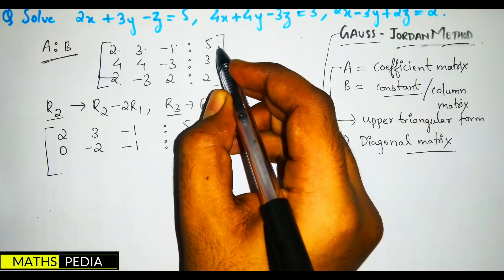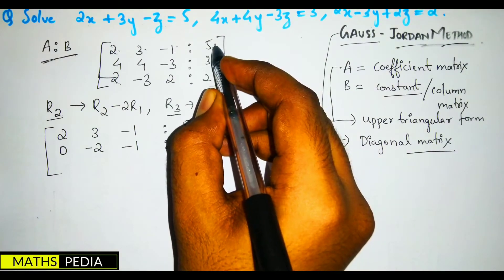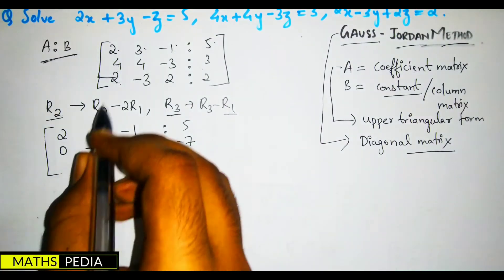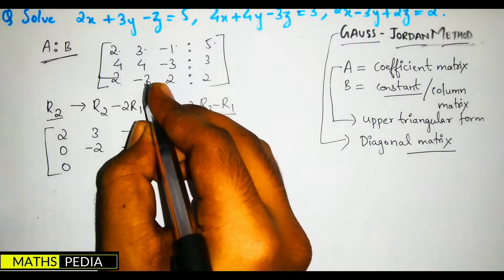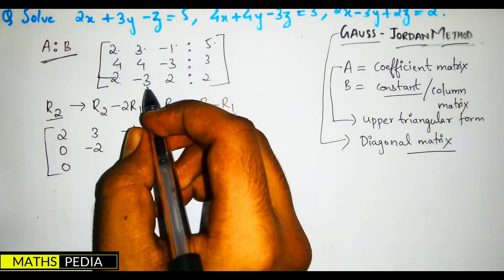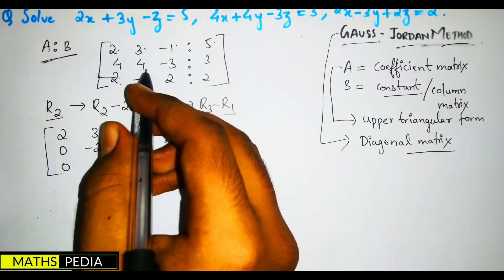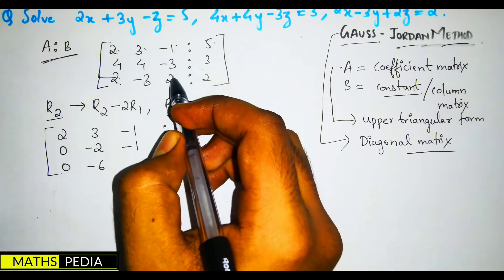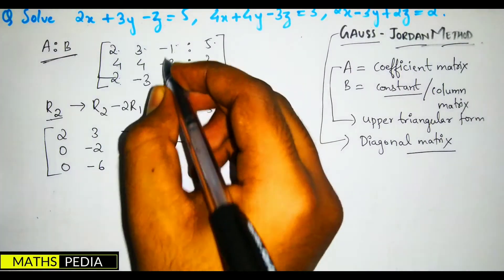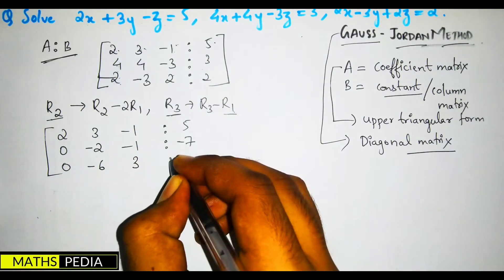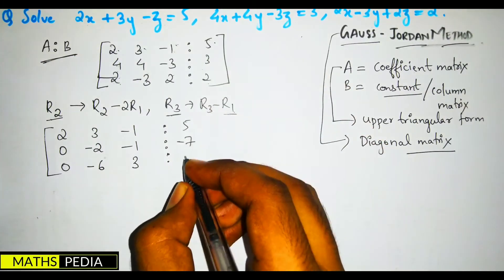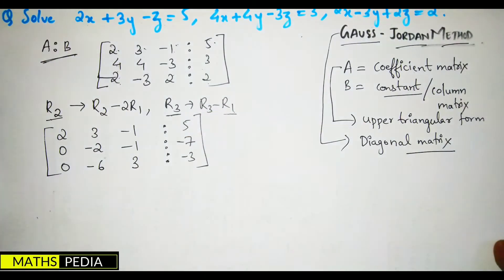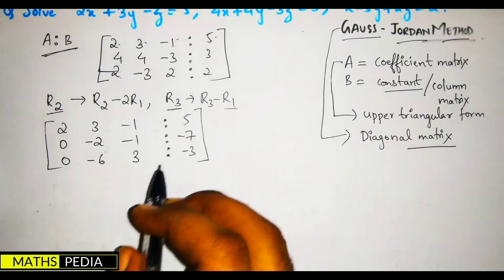After the row operations, the second row becomes [0, -9, 4 | -7] and the third row becomes [0, -1, 2 | -3]. Let me just verify: 3 minus 10 is -7, 2 minus 2 is 0, -3 minus -3 is -6, and 2 plus 1 is 3, 2 minus 5 is -3.